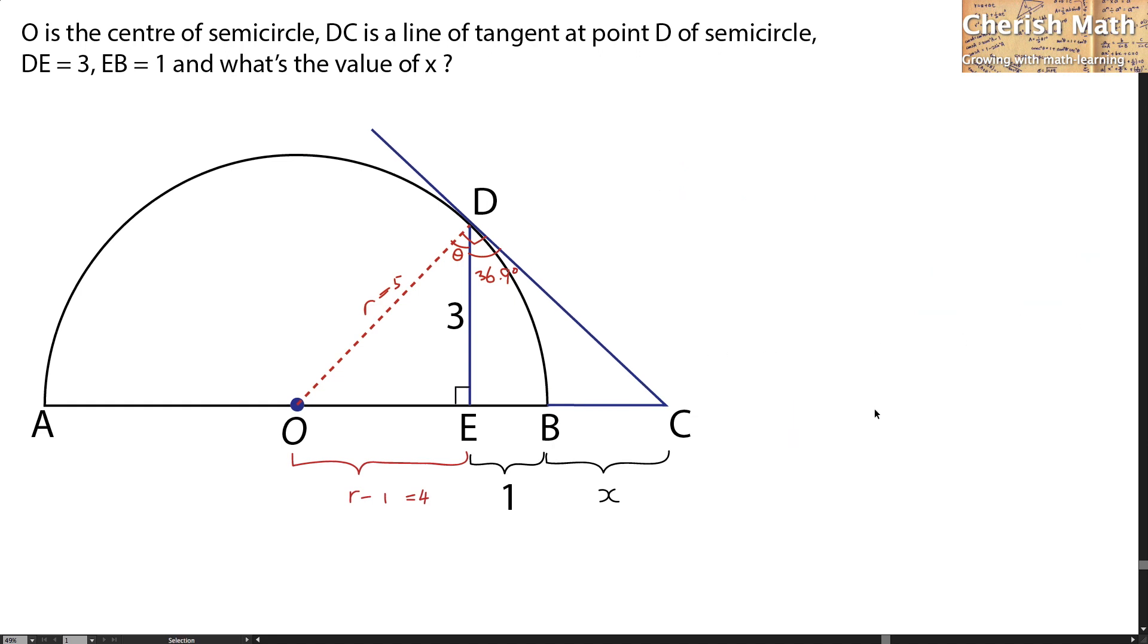And now I'm going into the second solution to solve the problem here. I will be using back the same information that we obtained from the first method where the radius of the semicircle is 5 and for the length of OE is 4.